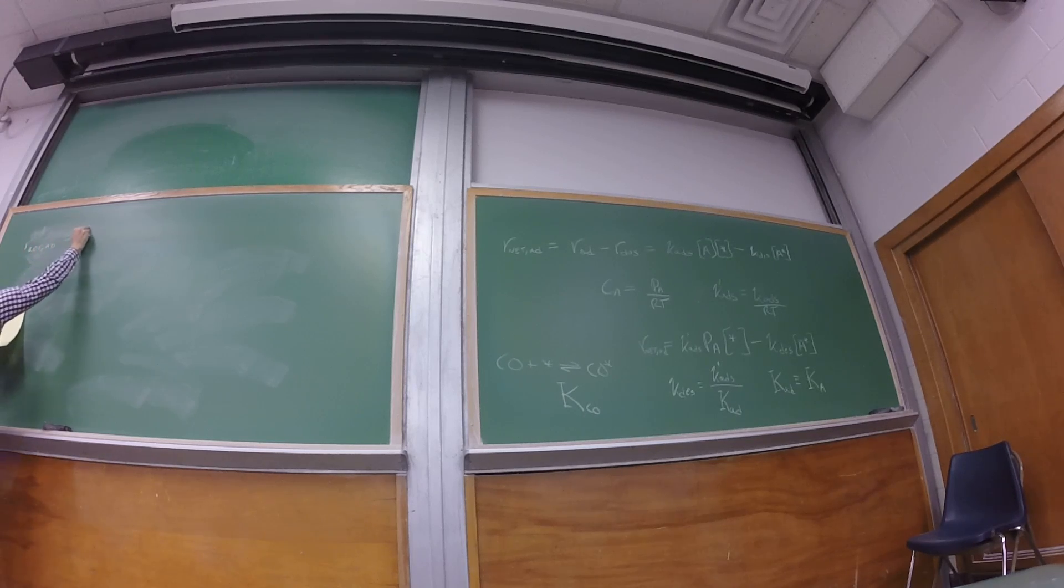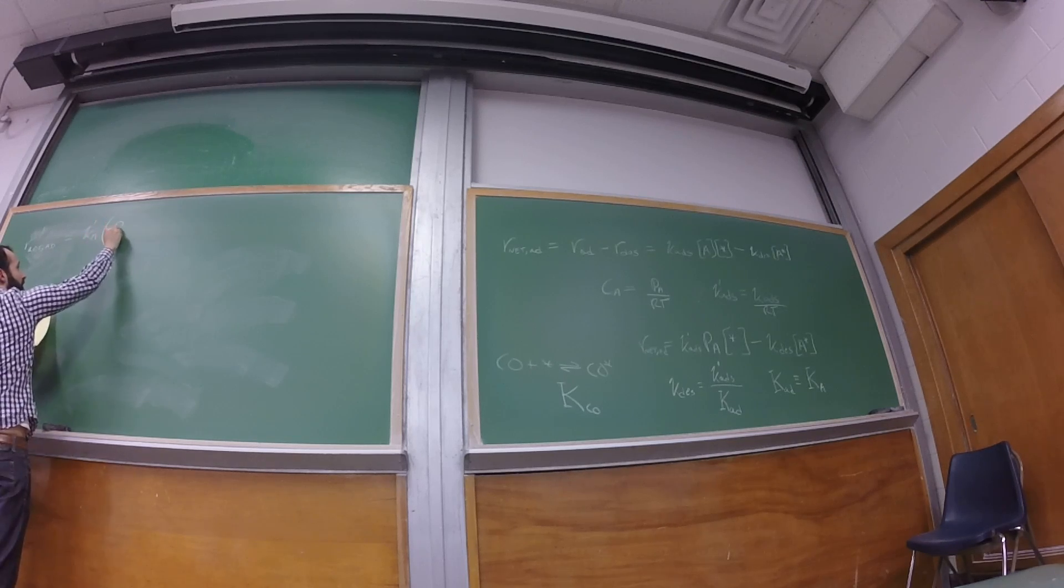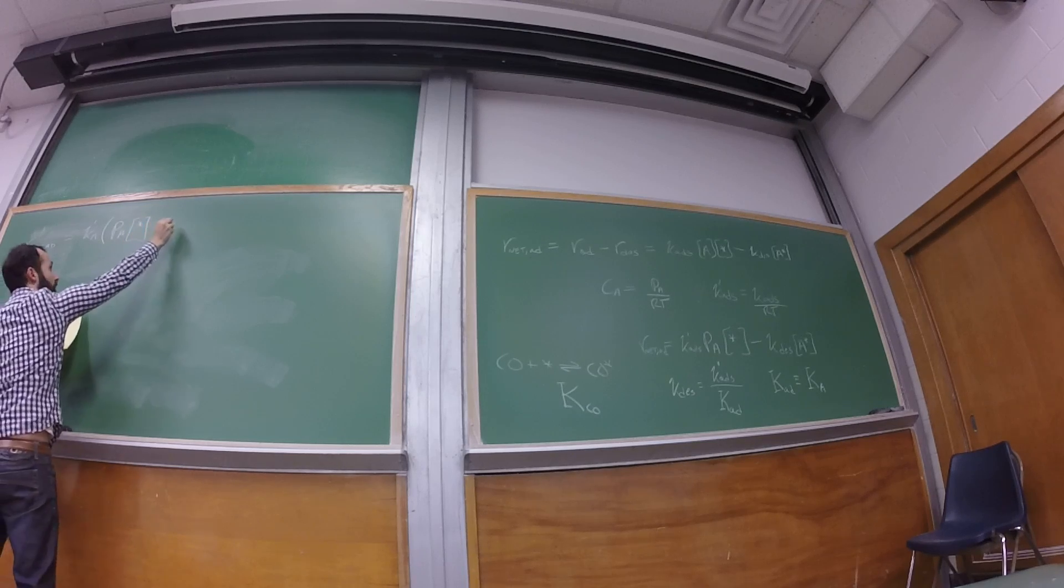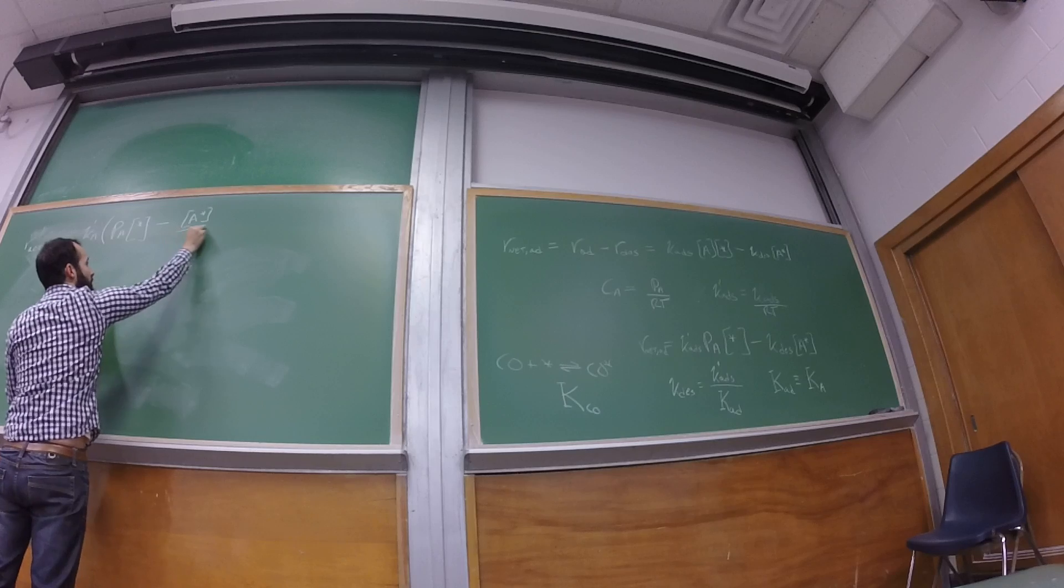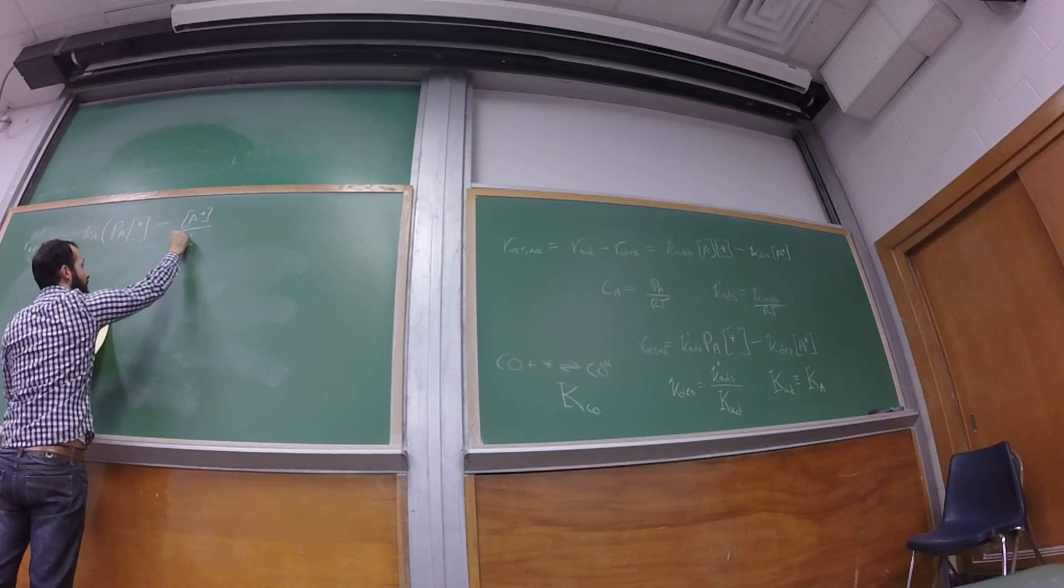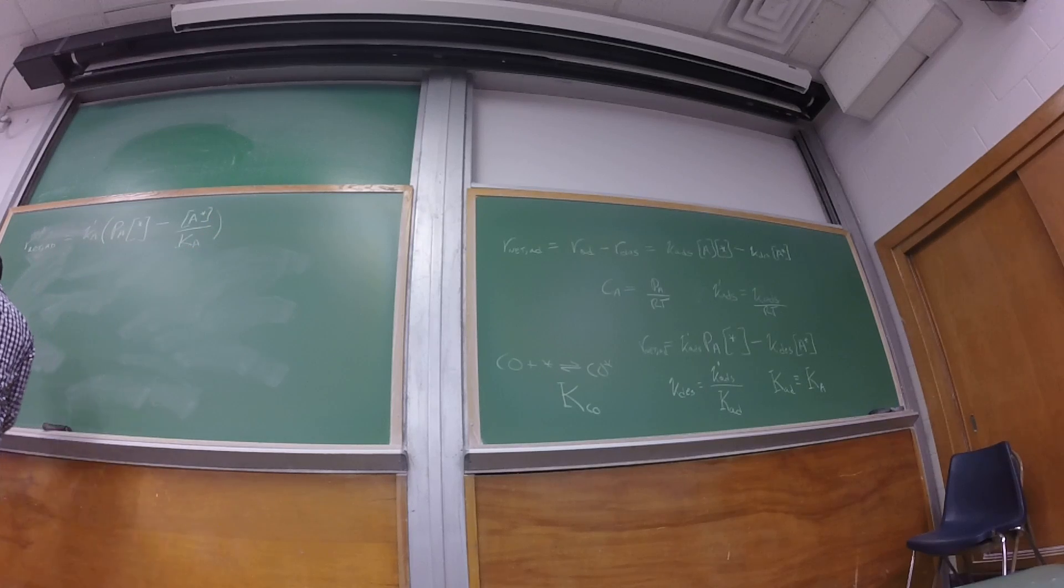So you can write the net rate of absorption is equal to k_A times the pressure of A, the concentration of vacancies minus the concentration of A star divided by big K_A. And so let's look at what would this be if we're at equilibrium. What is this equal to at the conditions of equilibrium? R_net is equal to zero.